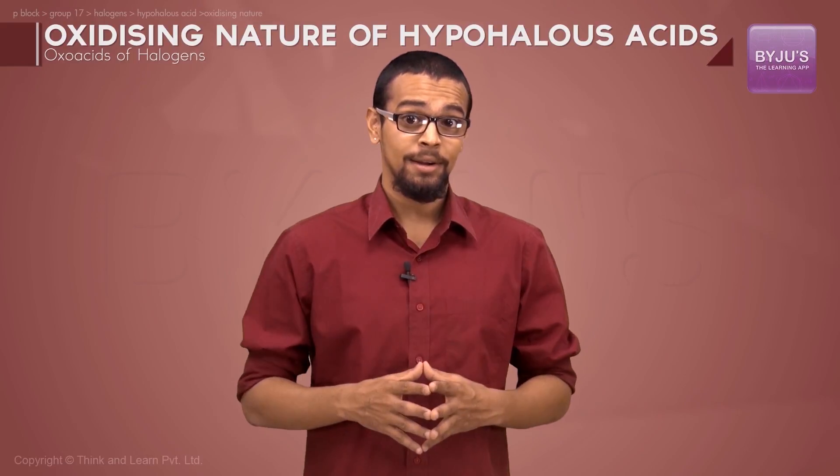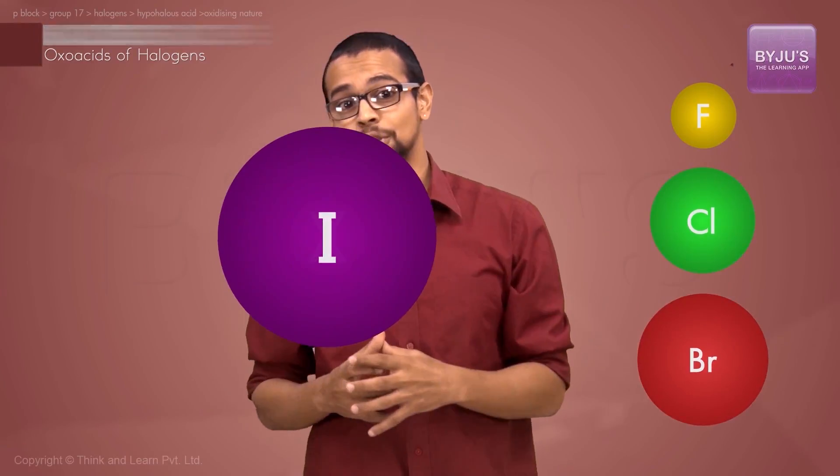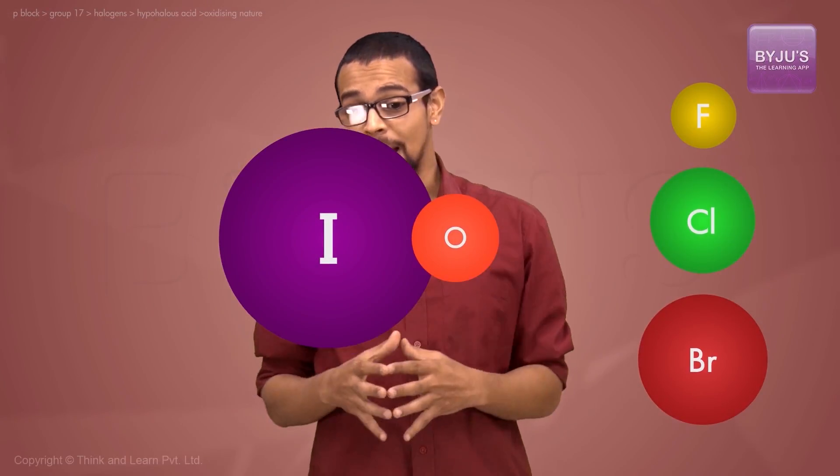Now if we look at the oxidizing power of the hypohalous acid or the hypohalite ion, unlike the bonding between hydrogen and halogen, if the halogen is a bigger halogen bonded with oxygen, there is a better overlap of electrons.